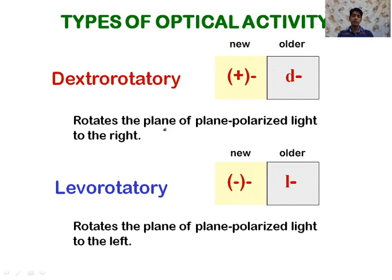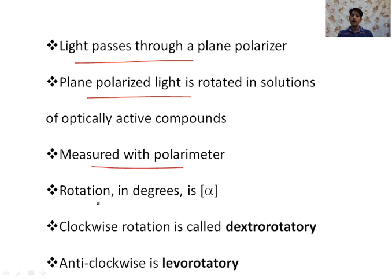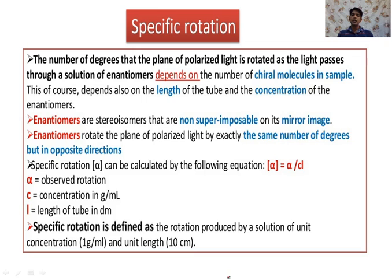Light passes through a plane polarizer; the plane polarized light is then rotated by a solution of an optically active compound. This whole instrumental setup is known as a polarimeter, and the optical rotation is measured in degrees. Clockwise rotation is known as dextrorotatory and anticlockwise rotation is known as levorotatory.